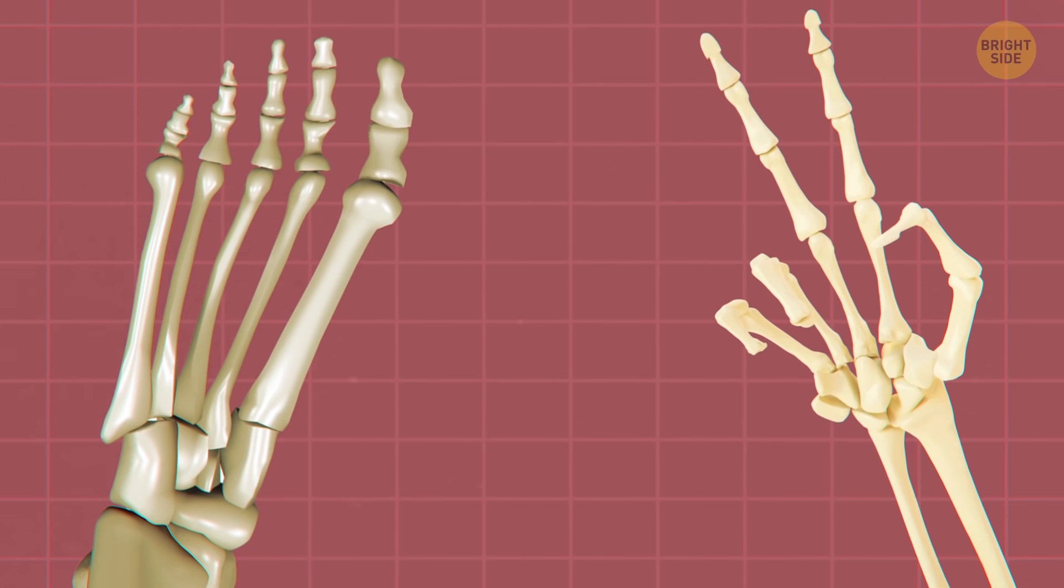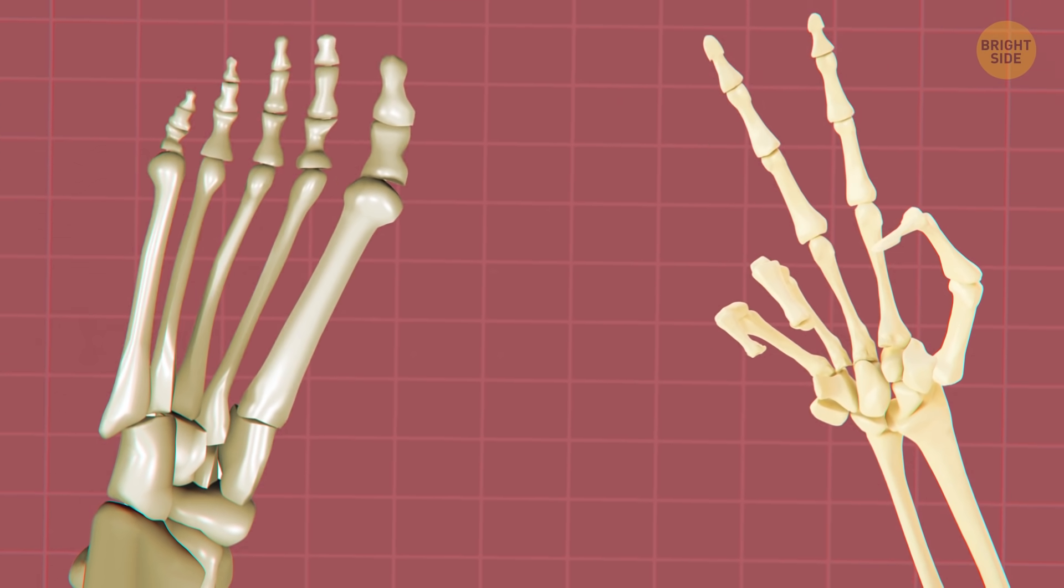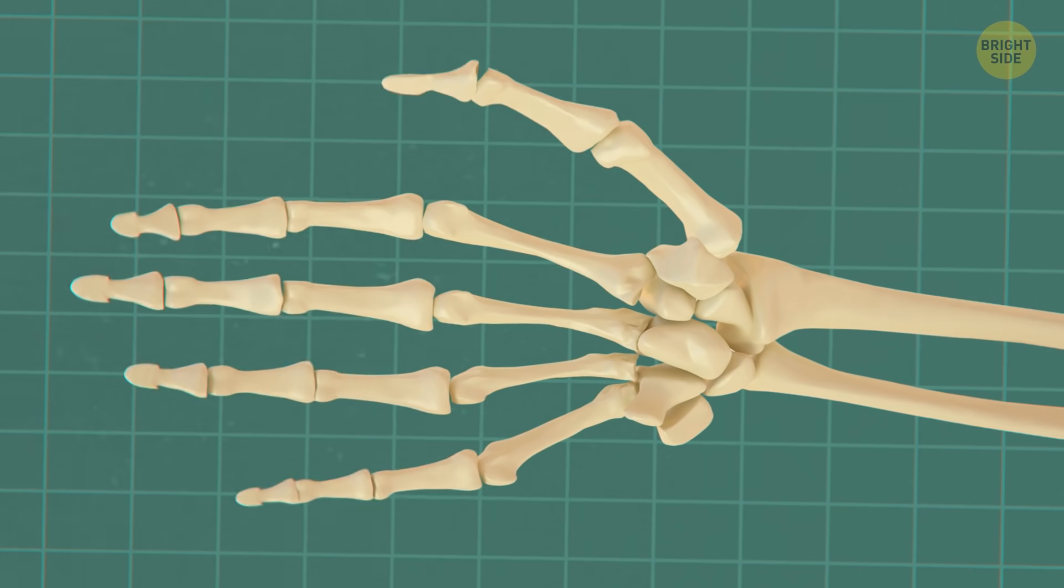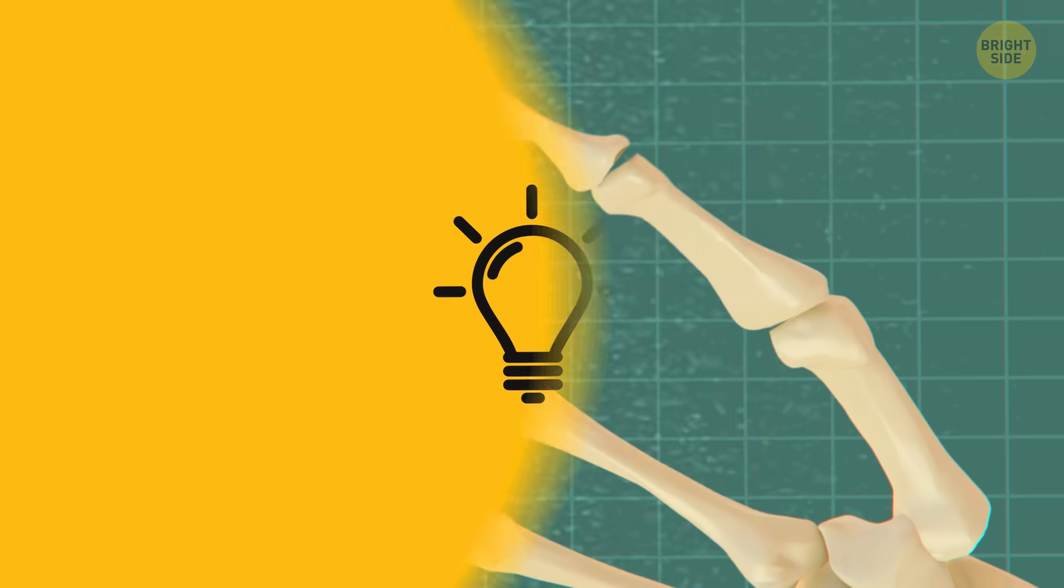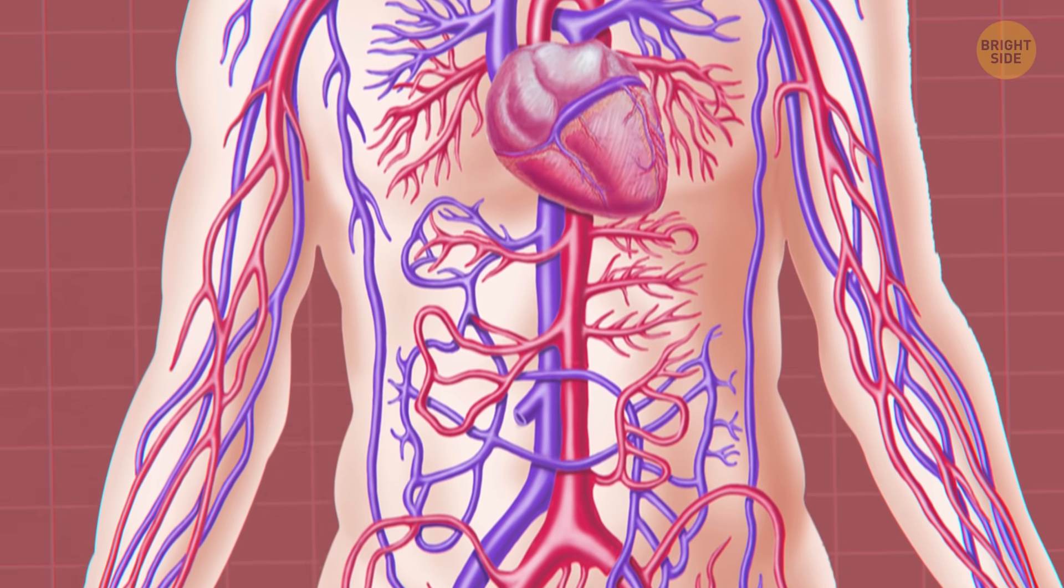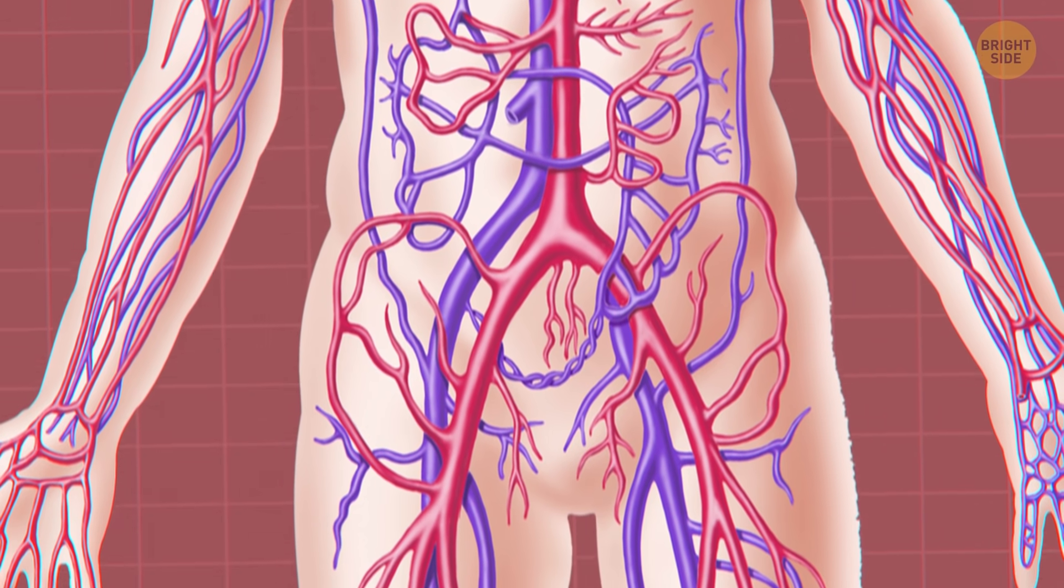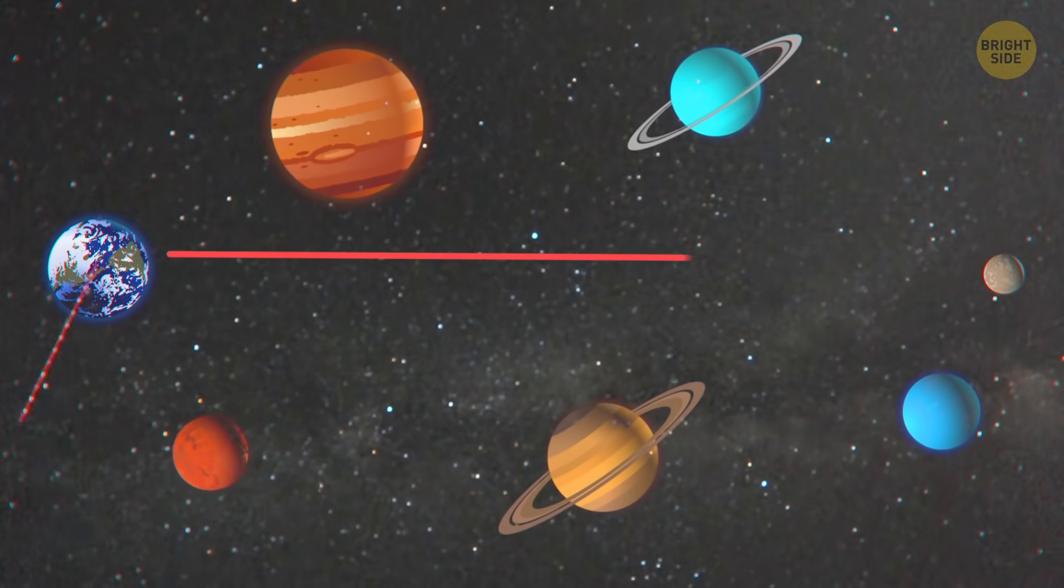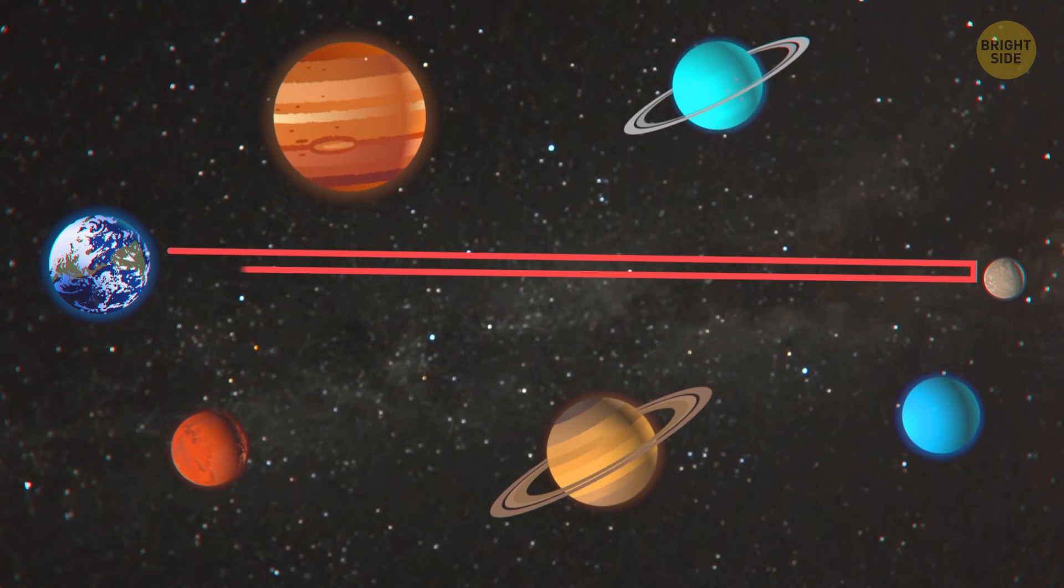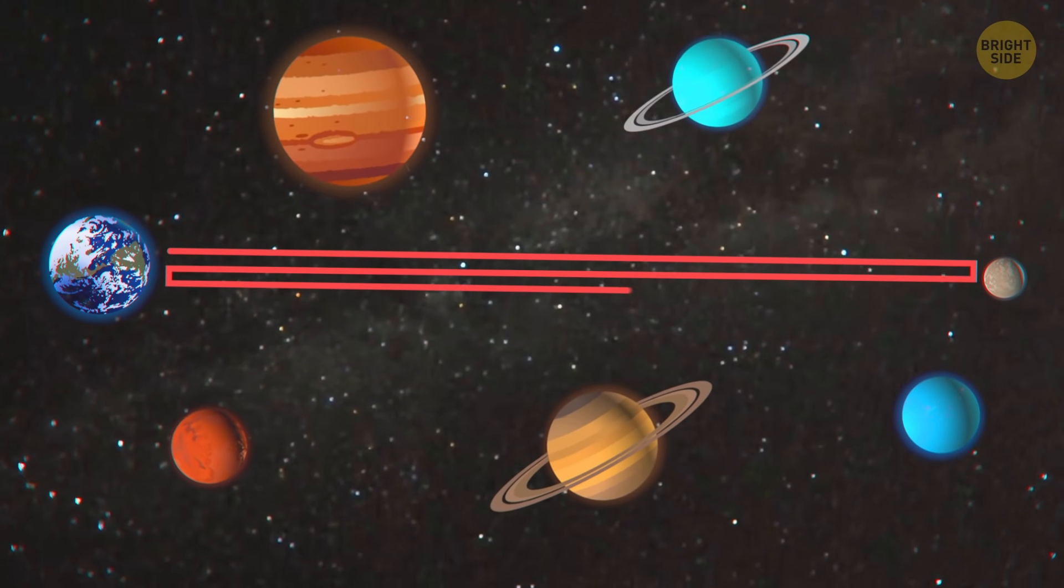More than half your bones are just in your hands and feet. All your fingers have three bones, but your thumbs only have two. Just bend them and see. Your capillaries are the smallest and most numerous types of blood vessels. You have 10 billion of them. In miles, that's enough to reach Pluto and back to Earth, and then to Pluto again, with some to spare.